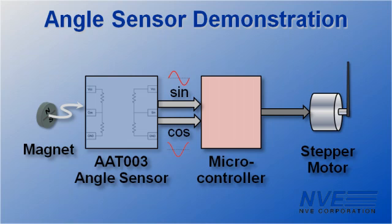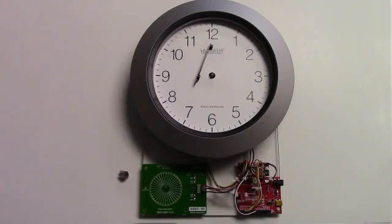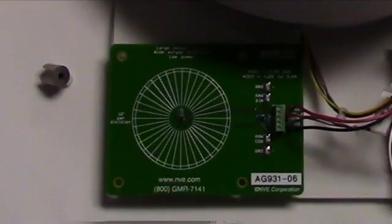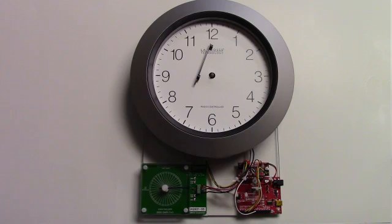The demonstration will also show a simple magnetic proximity sensor. Here's the demo. We have an AAT angle sensor mounted on this board and a split-pole magnet. You can buy these kits on our website.